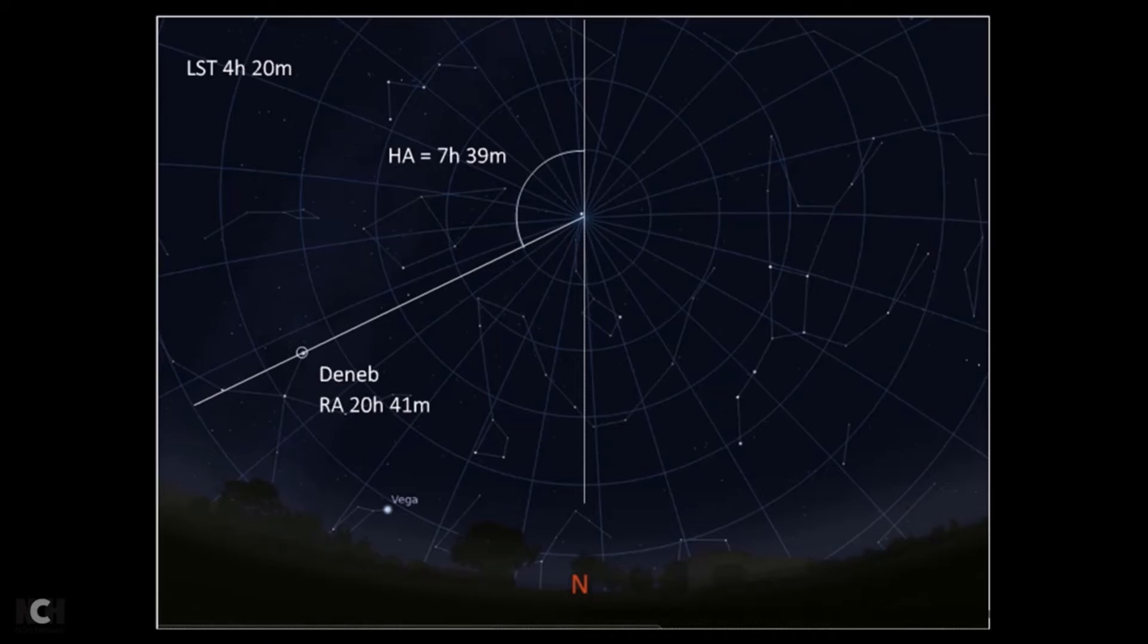Here's another example. This is looking at Deneb, which is in Cygnus. And on this diagram, Deneb has an hour angle of 7 hours and 39 minutes. That actually tells me that 7 hours and 39 minutes ago, Deneb culminated. So the hour angle is the time since the star culminated.